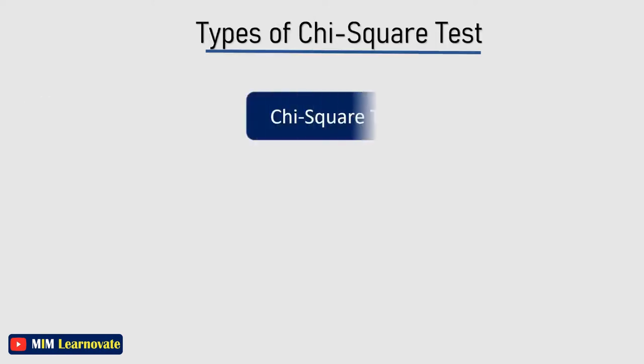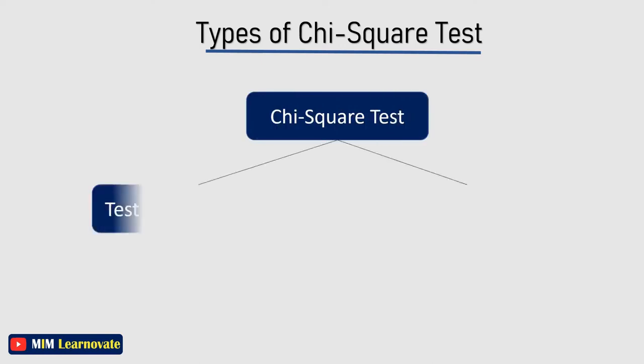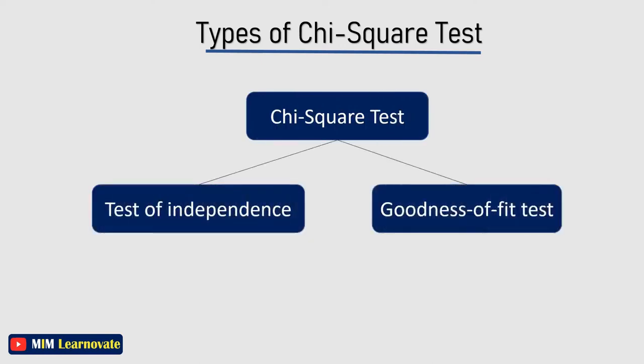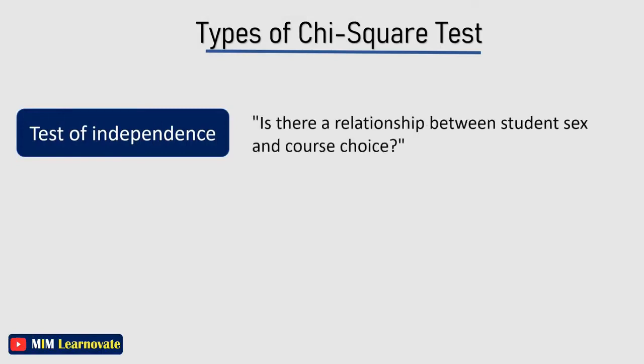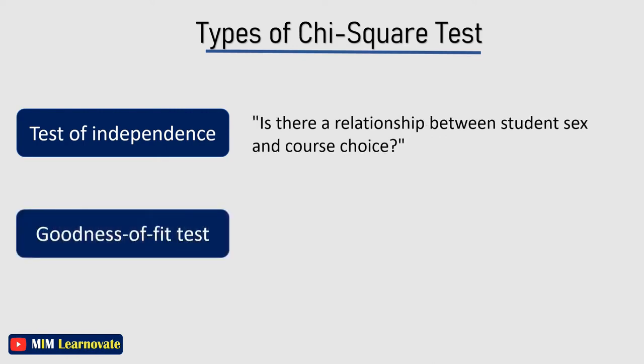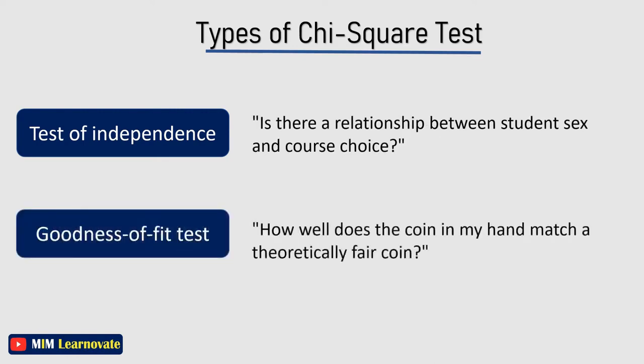Types of chi-squared test: there are two main kinds of chi-squared test — the test of independence and the goodness of fit test. For example, the test of independence asks a question of relationship such as: is there a relationship between student sex and course choice? The goodness of fit test asks something like: how well does the coin in my hand match a theoretical fair coin?